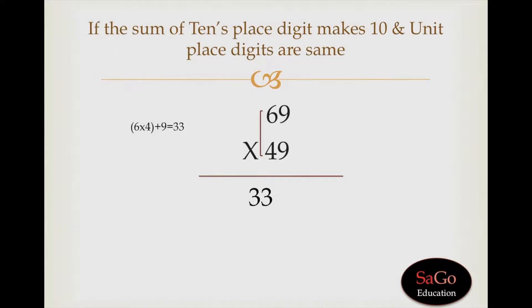Write 33 in the first part of the answer. In the next step we'll multiply ones place digits with each other which are 9 and 9. 9 into 9 comes 81, write 81 in the second part of the answer. Our answer is 3381.